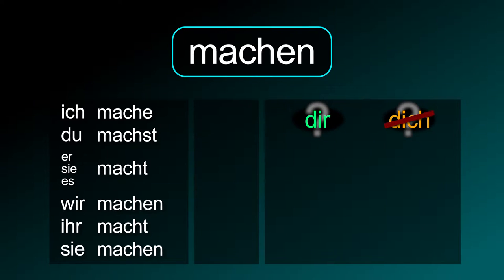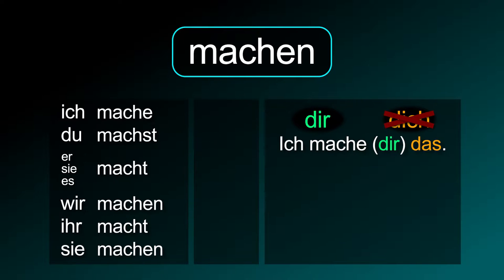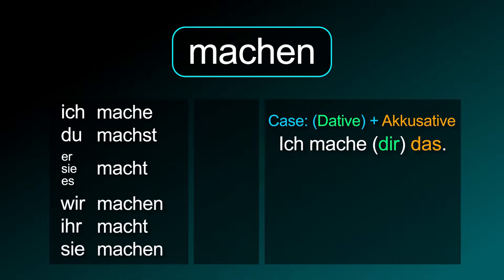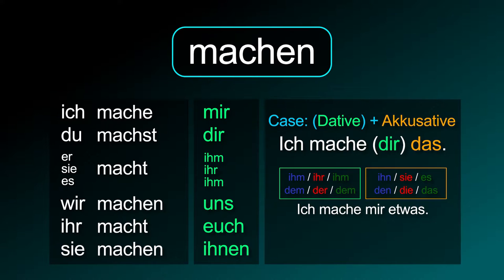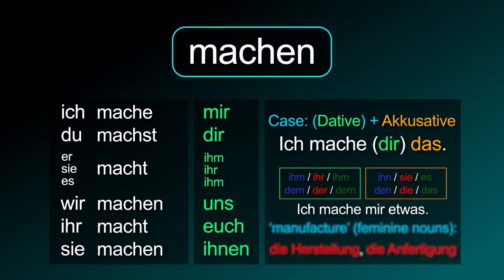The correct way to say 'I make that' or 'I make you that' is: ich mache das, or ich mache dir das. Use the correct personal pronoun or article depending on the noun or person's gender. 'I make myself something' is ich mache mir etwas. Possible nouns are: die Herstellung, die Anfertigung.